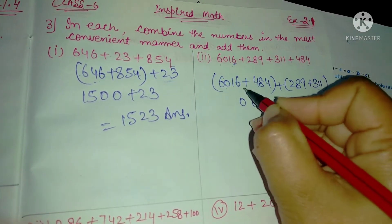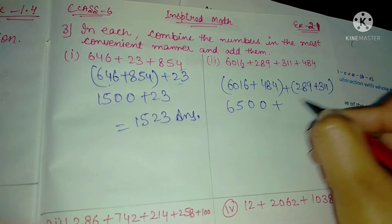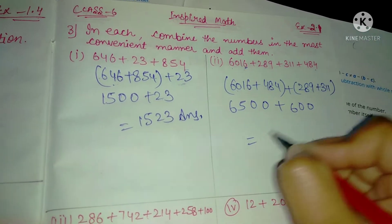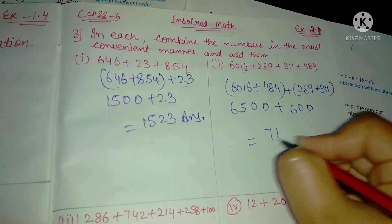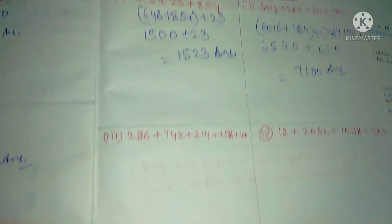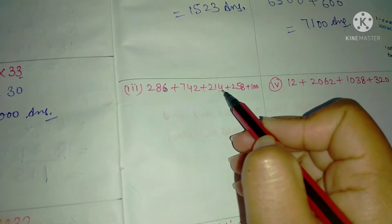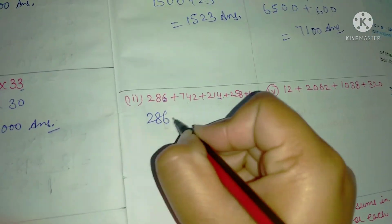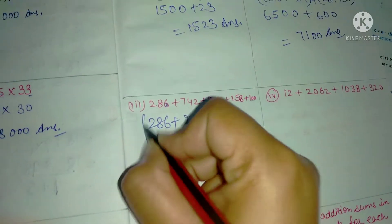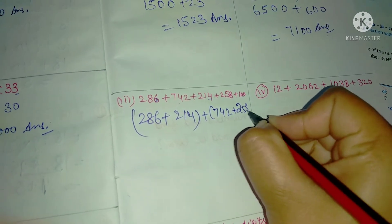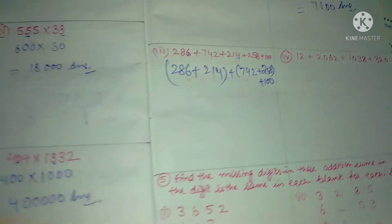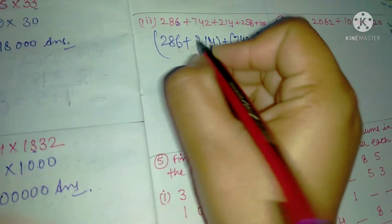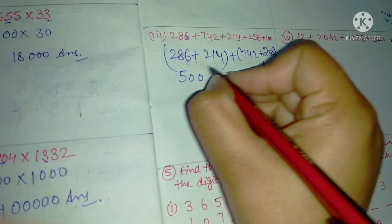Continuing: 4 plus 5 plus 6 gives 500 plus more. We have 286 plus 214 plus 742 plus 100. Adding these: 6 plus 4 gives 10, 8 plus 9 gives 10 carry, 1 plus 2 plus 2 plus 2 gives 4, then 1 plus 5 plus 5 gives a result.